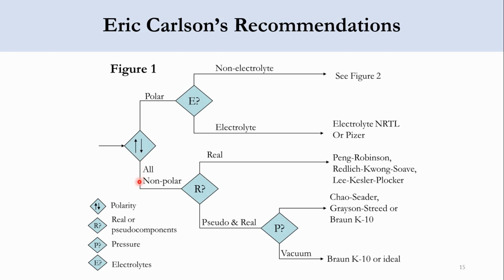If the system is all non-polar, we check whether it contains real or pseudo components. If it is a real component system, we choose Peng-Robinson, SRK (Soave-Redlich-Kwong), and Lee Kessler-Plocker (LKP). So for a non-polar, all-real system, the recommended models are PR, SRK, and LKP.